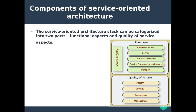The service-oriented architecture stack can be categorized into two main parts: functional aspects and quality of service. Within the functional aspects, the components include transport, service communication protocol, service description, business process, and service registry. Under quality of service, we have policy, security, and transaction management.